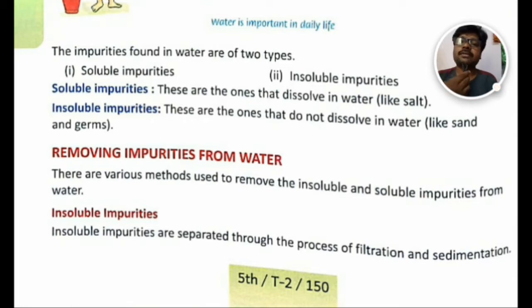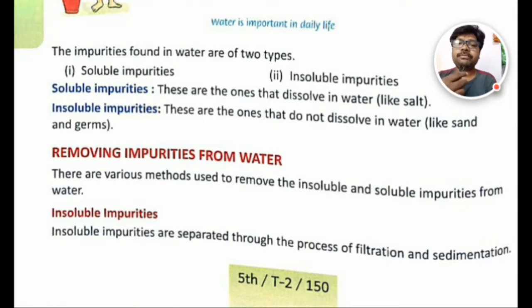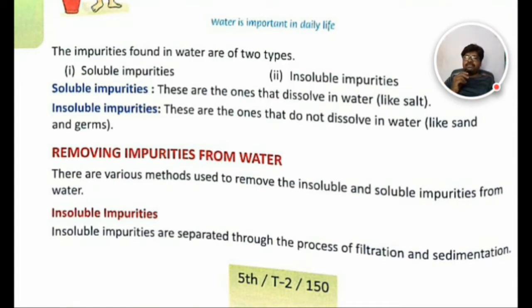In this video, we have been talking about water, sources of water, impurities of water, and types of impurities — two types: soluble and insoluble. If you find impurities in water, you should not use that water as is — you should remove the impurities. Removing impurities from water is the next sub-concept. You can see the bold heading: 'Removing Impurities from Water.'